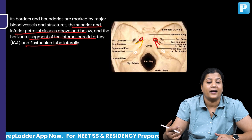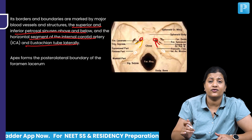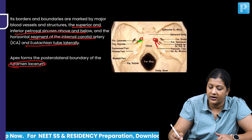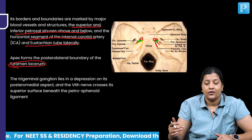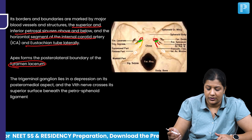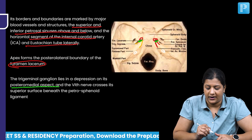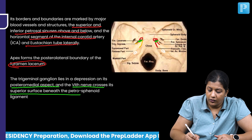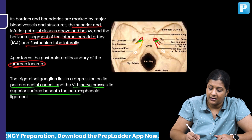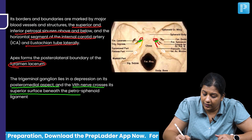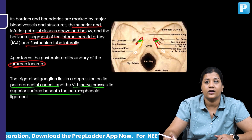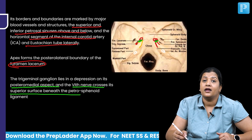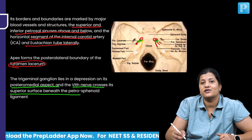The apex forms the posterolateral boundary of the foramen lacerum. The trigeminal ganglion sits in a depression on the posteromedial aspect of the petrous apex, and the sixth nerve crosses it superiorly on the superior surface, running below the Dorello's canal, which is formed by the petrosphenoidal ligament.